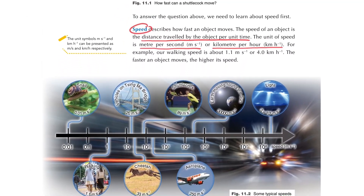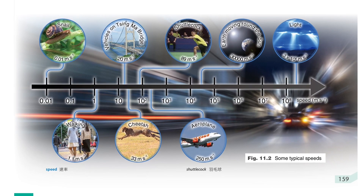Let's consider some examples. There is a chart showing the different speeds of different objects. From left to right, the speed increases — from the slowest snails to the very fast light. One important value to be aware of in this chart is scientific notation, which we learned in Form 2. For example, 10 to the power 3 is 1000, and 10 to the power 5 is 100,000. You should be able to interpret these values.